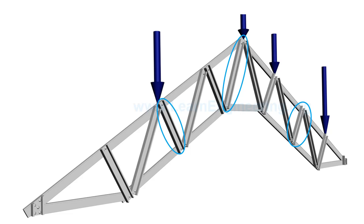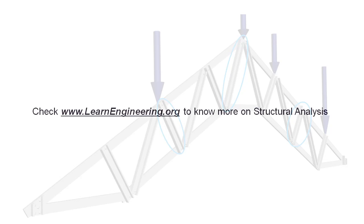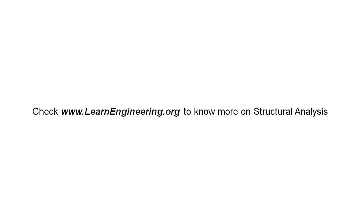So it's obvious that method of sections is quick, while method of joints is tedious. That's all about structural analysis using methods of sections. Thank you!